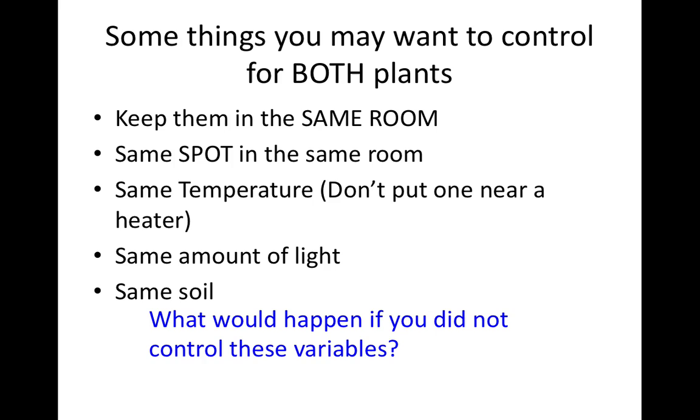Now what would happen if you did not control these variables? Let's say you put them in two different rooms and you also change the water—that's two different independent variables. If the growth between the two plants was different, can you really say that it was the water that made the plant grow or not grow? You can't, because it could very well be the fact that they're in different rooms and those two different rooms have some other kind of factor that's affecting the growth. So it's important that you control every variable except for the independent variable that you're trying to test for.